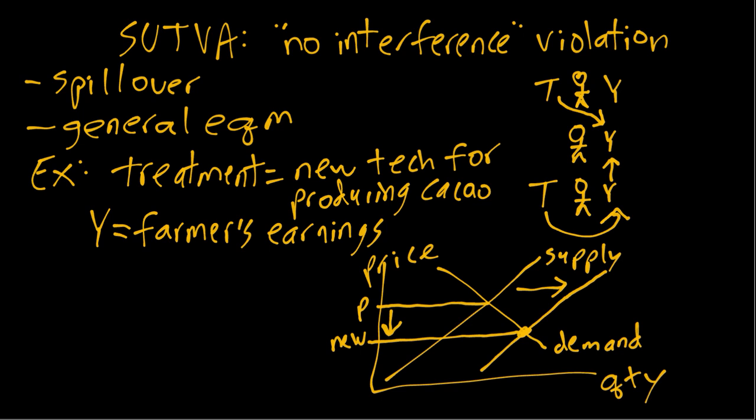But the main point for this example is that we have a clear violation of the no interference assumption, because even if we had a farmer like this middle one that does not get the technology, if every other farmer in the world does, that will decrease the price and thus decrease this middle farmer's earnings if they just produce the same quantity of cacao that they always have. So in other words, the treatment of all the other farmers is affecting even the untreated farmer's Y variable—their earnings—through this general equilibrium mechanism in the global cacao market that affects the price.